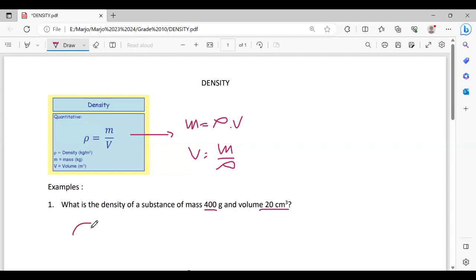This one is the formula. So m = 400 grams and then over 20 centimeters, over 20 times 10 to the power minus six, okay, meters cube.